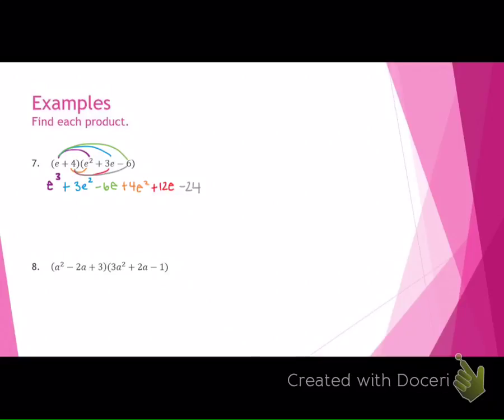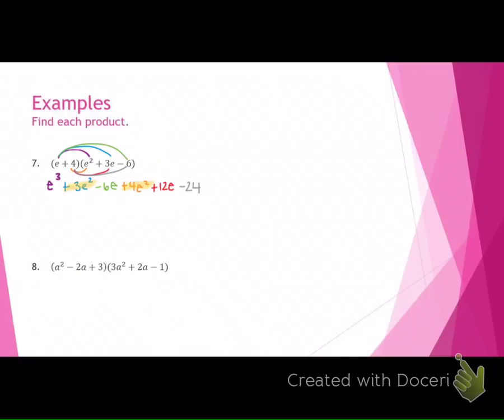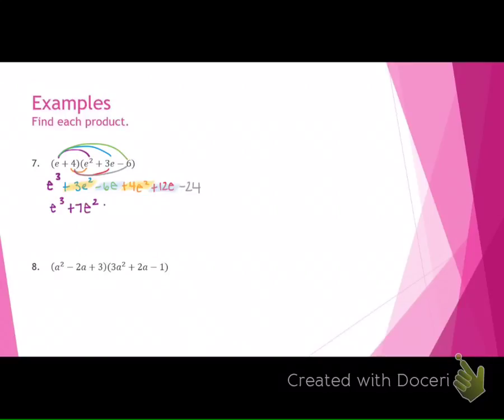I was trying to show you guys with my colors what went with what. Does that help? What are my like terms, Blaine? Give me some like terms. I've got 3E squared and 4E squared. What else? Negative 6E and 12E. Is there any other like terms? No. So we drop down the E cubed. Blaine, what is 3E squared plus 4E squared? 7E squared. What is negative 6E plus 12E? 6E. And then we just drop down the negative 24.